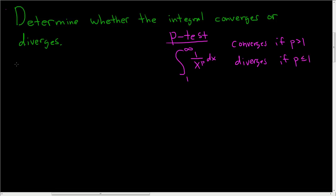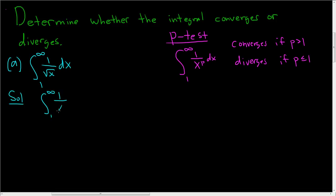That's the main thing we'll be using in these examples. For our first example, we take the improper integral from 1 to infinity of 1 over the square root of x dx. We can rewrite this as 1 to infinity of 1 over x to the 1/2 dx. So p equals 1/2, and that is less than or equal to 1, so our integral diverges by the p-test.